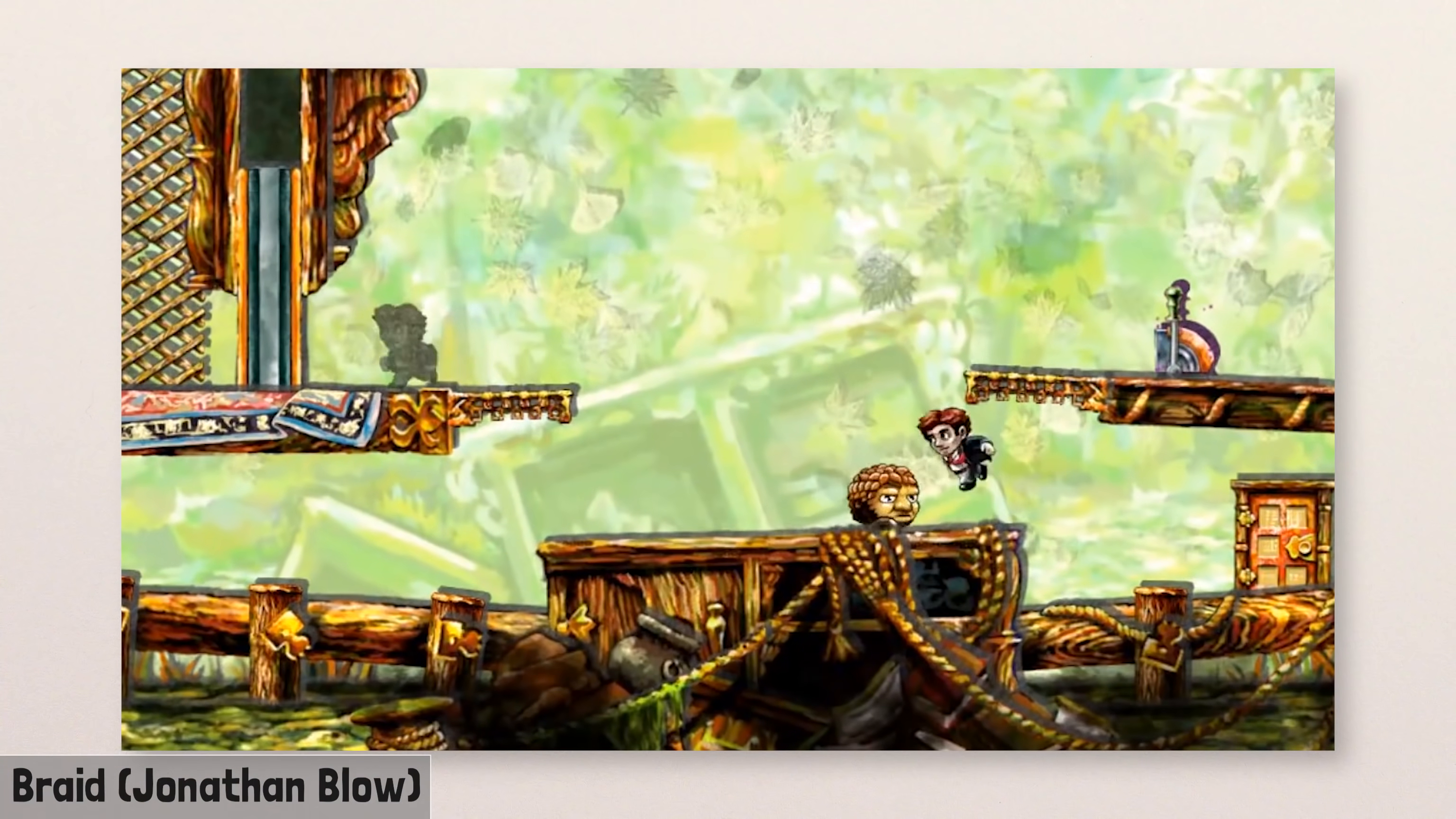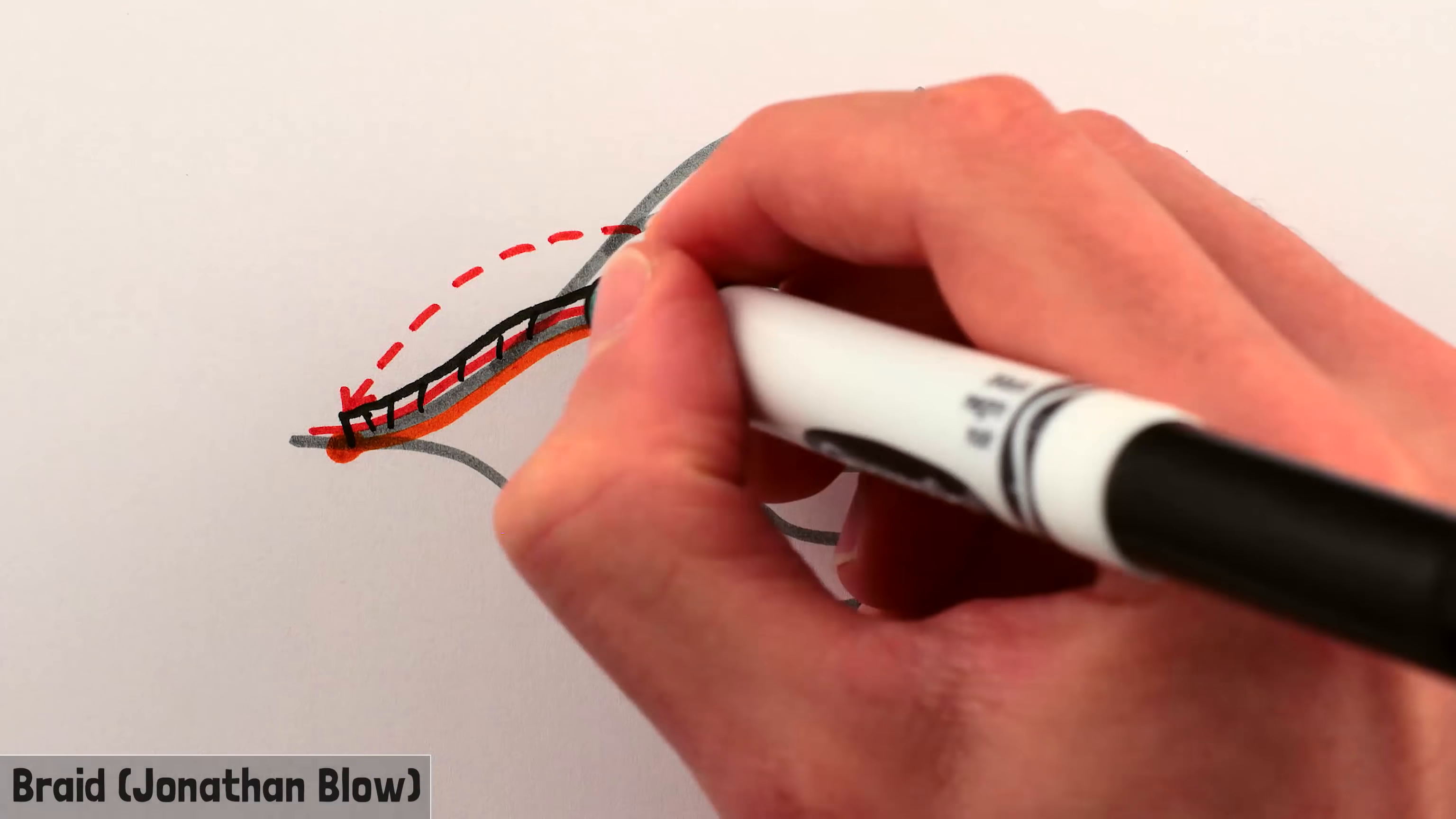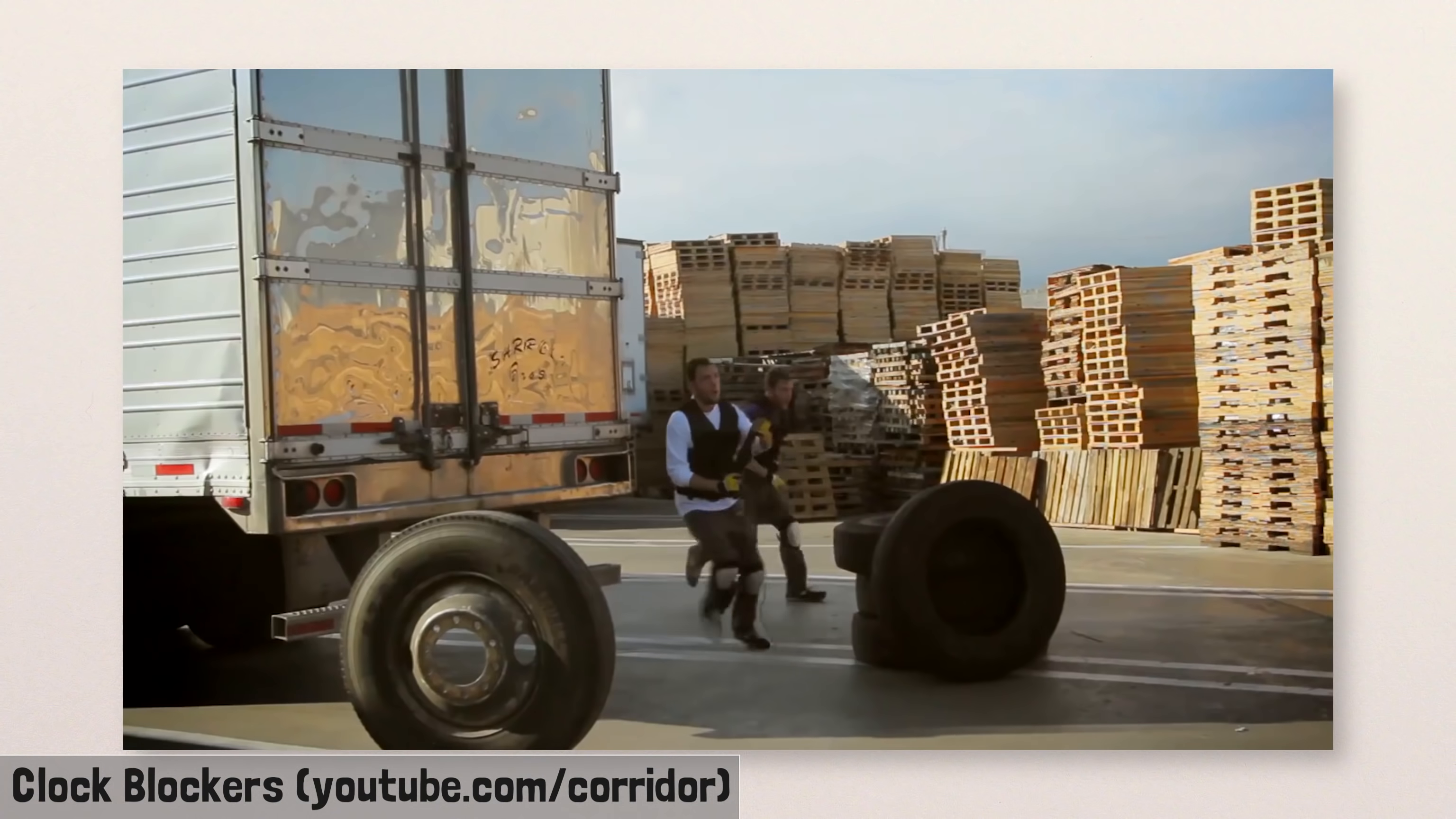Braid also has another kind of time travel, where you go back to your past as a separate individual, and while the past version of you is there, it has no free will – it just does exactly what you did the first time around, while the time traveling you can change the course of history. This is also how the video Clock Blockers by the Corridor Digital YouTube channel works.